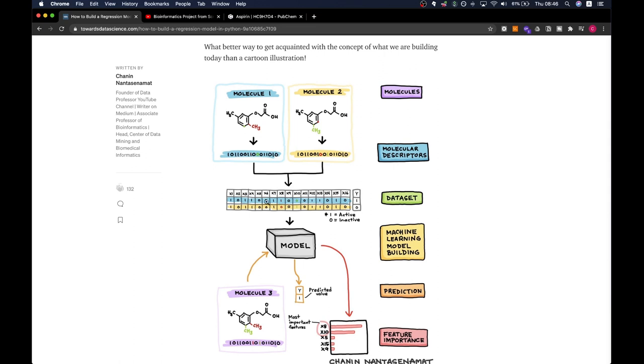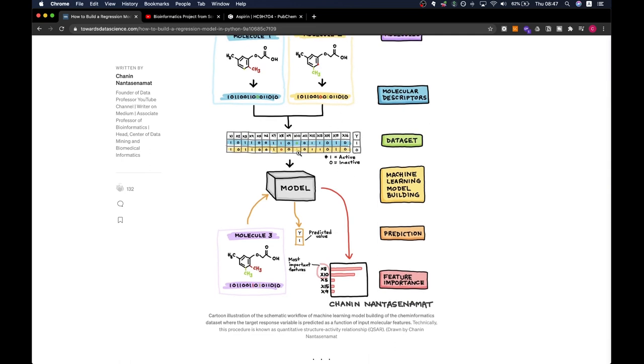Such molecular descriptors or fingerprints will then be used as a dataset together with the class label. In this example, the class label would be the bioactivity of a molecule, whether the molecule that we show here is able to inhibit a particular protein of our interest. The X matrix here will represent the X descriptors, or the input descriptor, which will be used for predicting the Y, which is the ability to inhibit or not inhibit. If it is able to inhibit the target protein, it will have a value of one. If not, it will have a value of zero. Such X and Y matrices are then used for the development of a machine learning model.